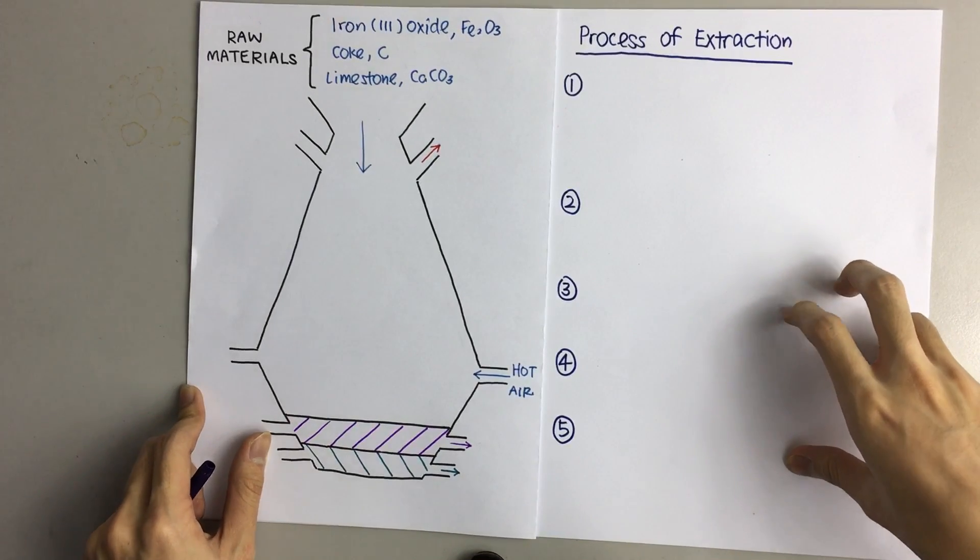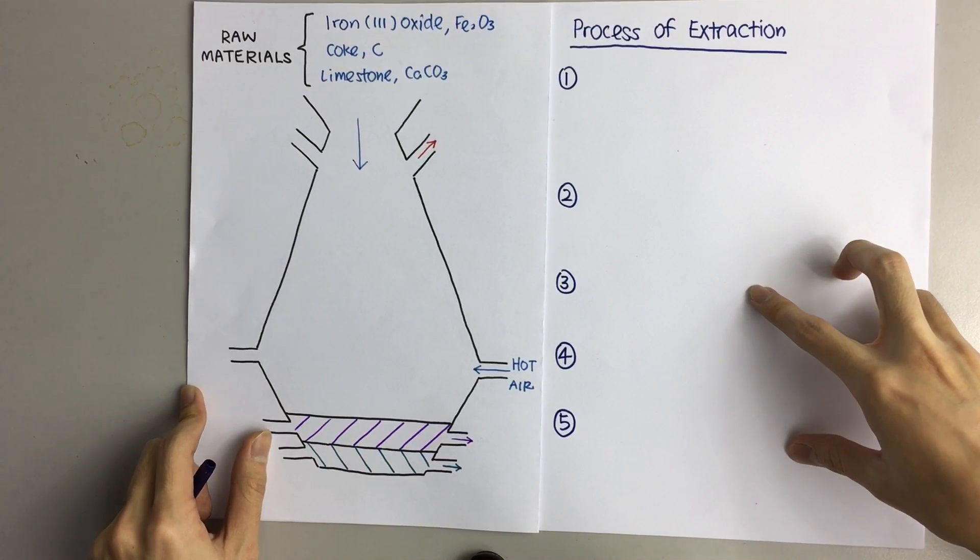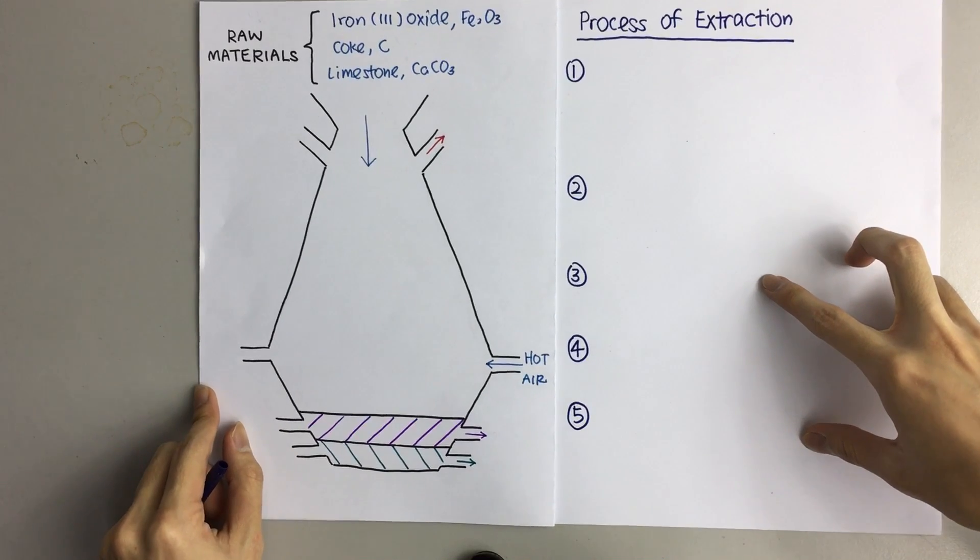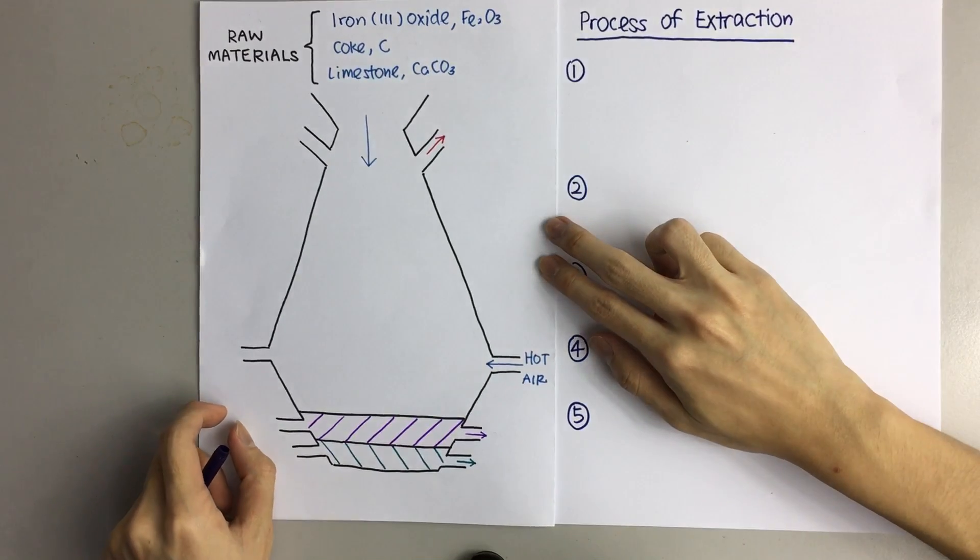Today we'll be talking about the extraction of iron from hematite or iron 3 oxide. Iron is extracted through the blast furnace.